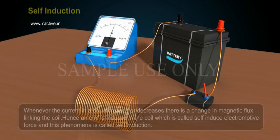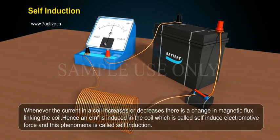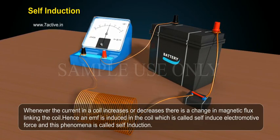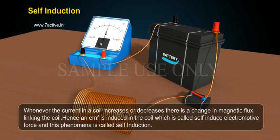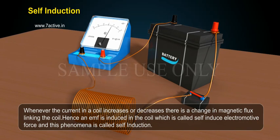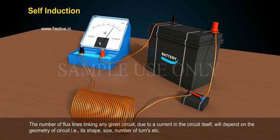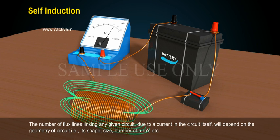Self-induction. Whenever the current in a coil increases or decreases, there is a change in magnetic flux linking the coil. Hence, an EMF is induced in the coil, which is called self-induced electromotive force, and this phenomenon is called self-induction.